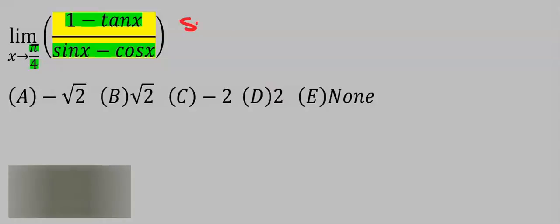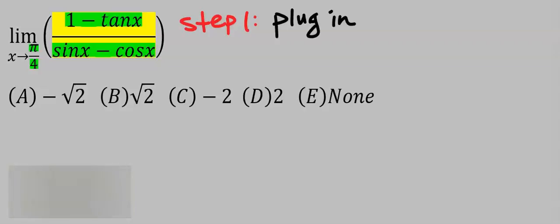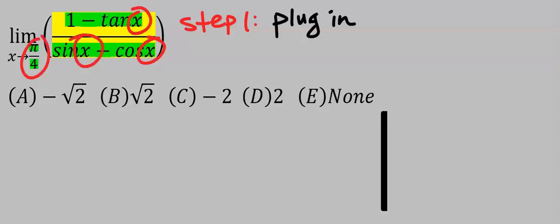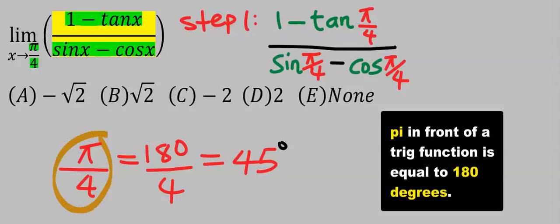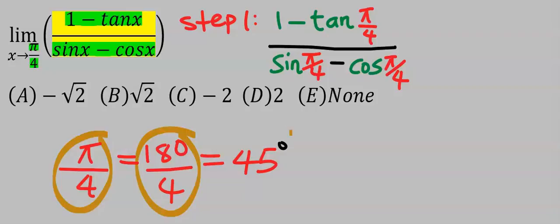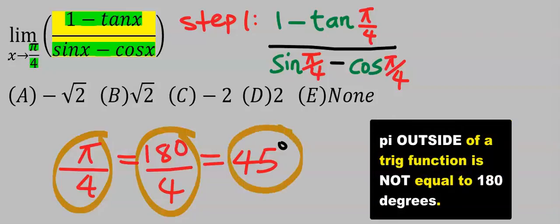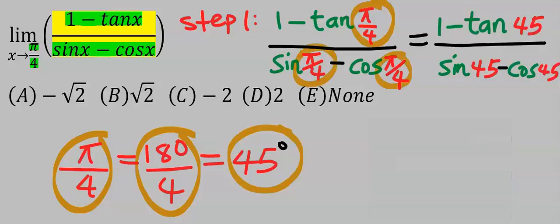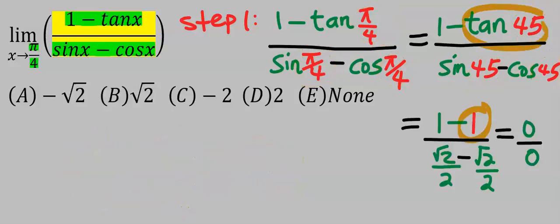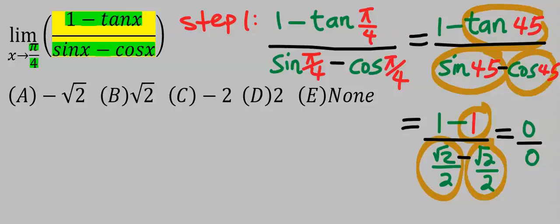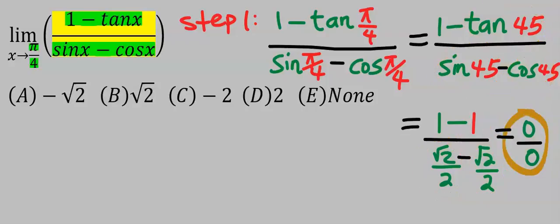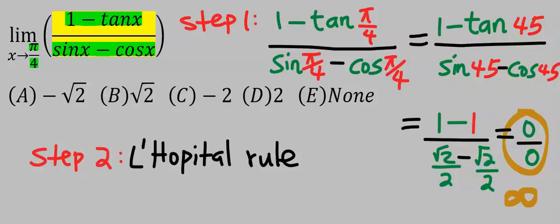Step one is to plug in x = π/4, that is wherever I see x I will put π/4. π/4 is the same as 180/4, which is 45 degrees. Hence, tan 45 is 1, sin 45 is √2/2, and cos 45 is √2/2. Here we get 0 over 0, which is undefined.